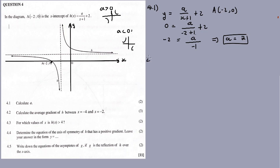4.2. So we totaled two marks there. 4.2 — calculate the average gradient between x equal to negative 4 and x equal to negative 2.